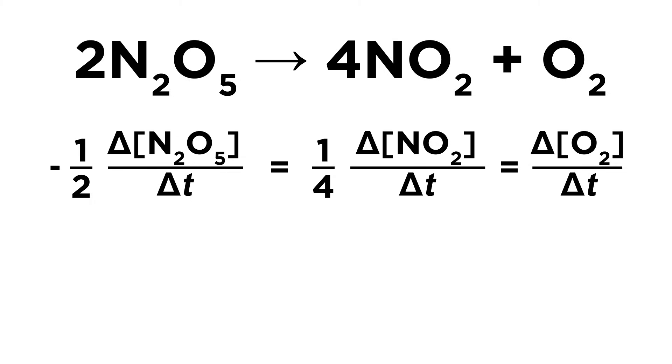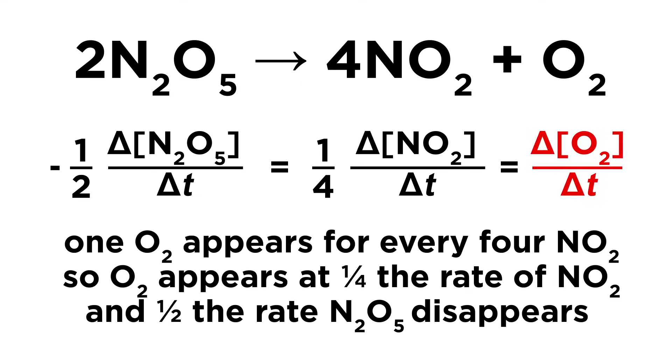Rates of change will obey stoichiometry, so for example if we look at this reaction we have to understand that oxygen appears at one-fourth the rate of NO2 and at one-half the rate at which N2O5 disappears.